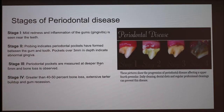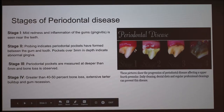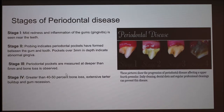There are four stages of periodontal disease and it increasingly gets worse. Stage one: you have mild redness and inflammation of the gums, commonly known as gingivitis, seen near the teeth. Stage two: probing indicates periodontal pockets have formed between the gum and the tooth. Pockets over three millimeters in depth indicate abnormal gingivitis of the gums.